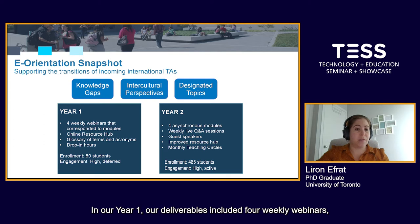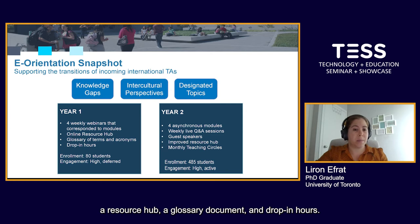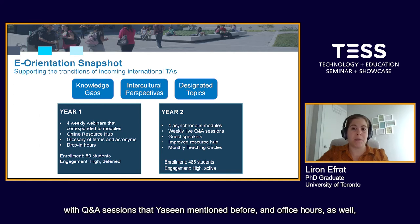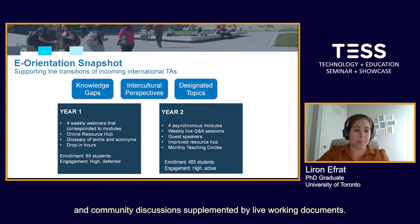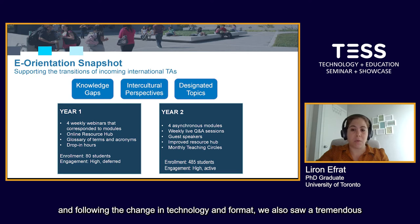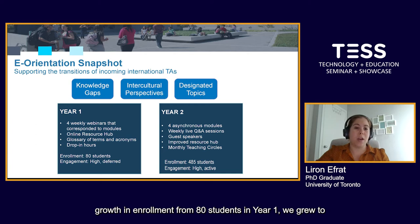In year one, our deliverables included four weekly webinars, a resource hub, a glossary document, and drop-in hours. We adjusted those in year two to become a series of short videos with Q&A sessions and office hours, as well as community discussions supplemented by live working documents. In both years we maintained the emphasis on intercultural perspectives, and following the change in technology and format, we saw tremendous growth in enrollment — from 80 students in year one, we grew to 485 students in year two.